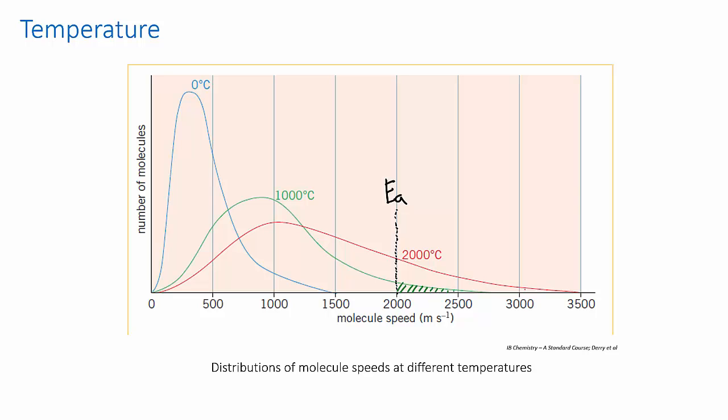If you increase the temperature again to 2000 degrees C, the proportion of molecules with sufficient energy is now much higher, and this means that the chances of a successful collision is also much higher. And if there's a greater probability of successful collisions, the reaction will go faster.